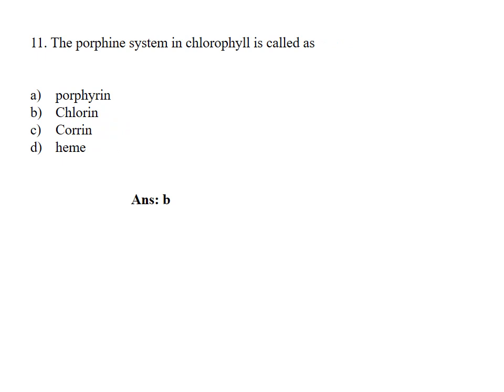The porphyrin system in chlorophyll is called as: Option A, Porphyrin; B, Chlorin; C, Corin; D, Heme. Answer Option B, Chlorin.